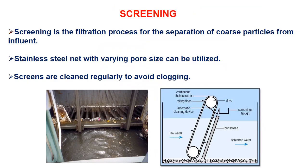Now some of those steps are shown with diagrams. Screening is the filtration process for the separation of coarse particles from the effluent. Stainless steel net with varying pore size can be utilized, and screens are cleaned regularly to avoid clogging. These are very large structures through which all the wastewater passes to remove large-size particles and waste matter.